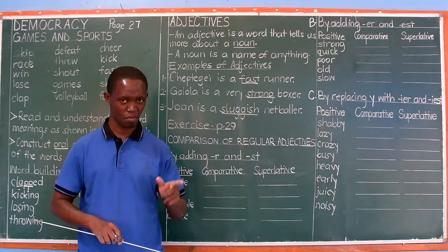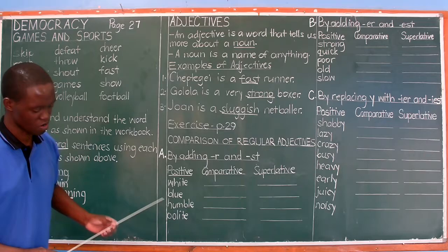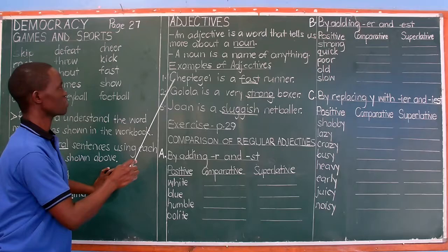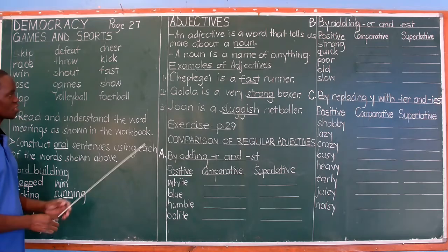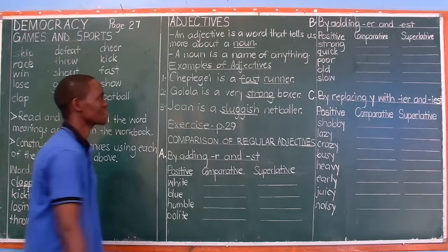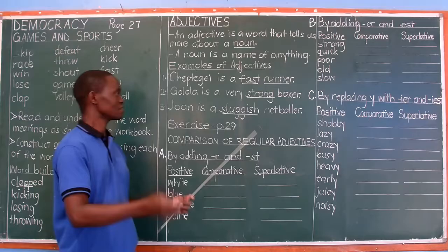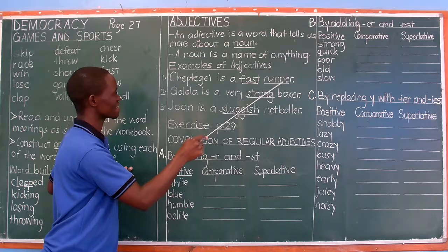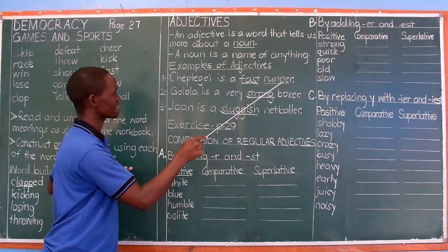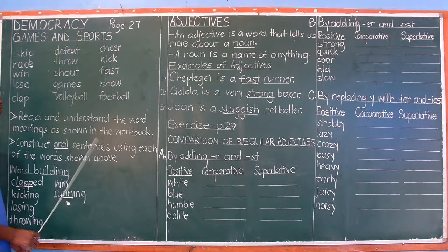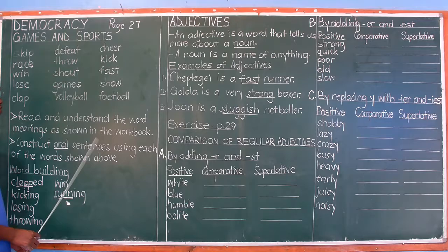Jovan is a stubborn boy — 'stubborn' is our adjective giving more information about the noun 'boy'. From the board: Cheptegei is a fast runner — 'fast' describes 'runner'. Golola is a very strong boxer — 'strong' is the adjective. Big Jovan is sluggish — 'sluggish' is the adjective. Exercise on page 29 requires you to underline the adjective used in each of those sentences.